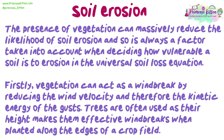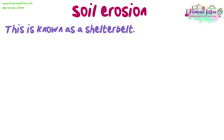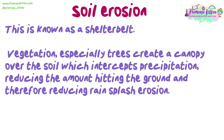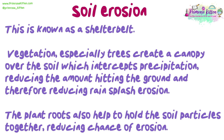Firstly, vegetation can act as a windbreak, reducing the wind velocity and therefore the kinetic energy of the gusts. Trees are often used, as their height makes them effective windbreaks when planted along the edges of a crop field — this is known as a shelter belt. Vegetation, especially trees, also create a canopy over the soil which intercepts precipitation, reducing the amount hitting the ground and therefore reducing rain splash erosion. The plant roots also help to hold the soil particles together, reducing the chance of erosion.